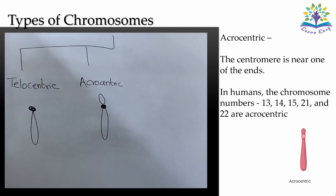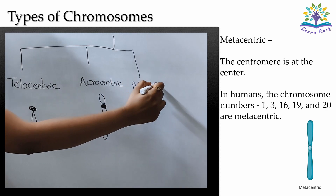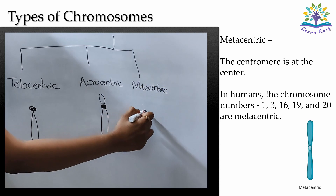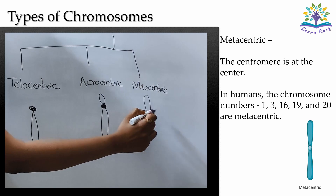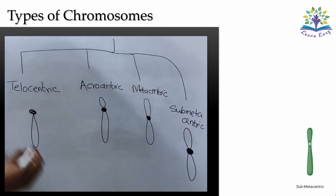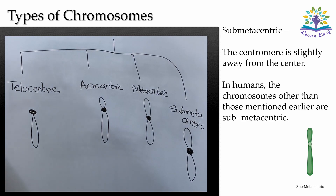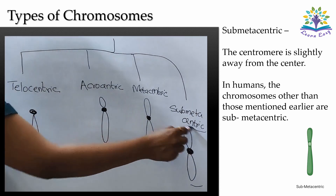In humans, chromosome numbers 13, 14, 15, 21, and 22 are acrocentric. The third type is metacentric, where the centromere is at the center so the P arm and Q arm have equal length. In humans, chromosomes 1, 3, 16, 19, and 20 are metacentric. The fourth type is submetacentric, where the centromere is slightly away from the center so one arm will be a little shorter than the other. In humans, the chromosomes other than those mentioned earlier are submetacentric.